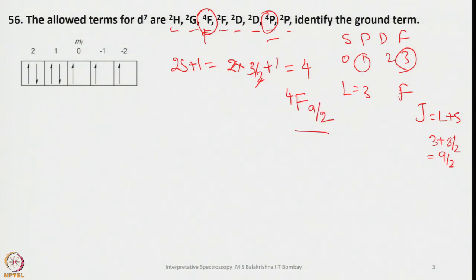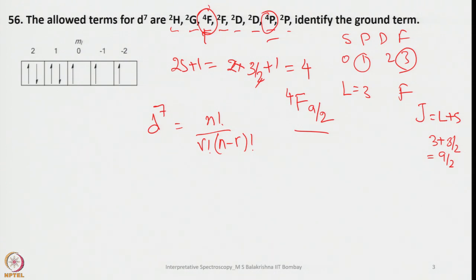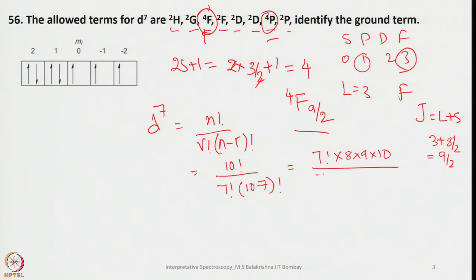To find the number of microstates for D7, use the combination formula: N!/(R! × (N−R)!), where N is the total capacity of the subshell (10 for d orbitals) and R is the number of electrons (7). So it is 10!/(7! × 3!) = 120 microstates.